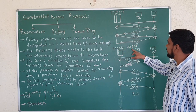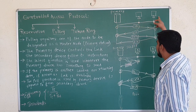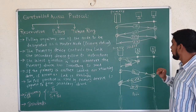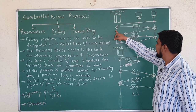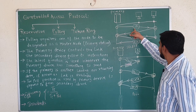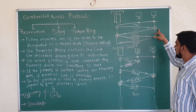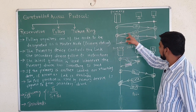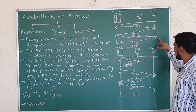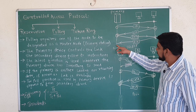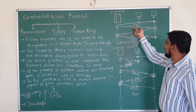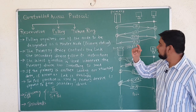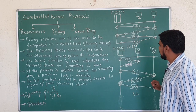This is an example of a select function. One node is decided as the primary node; all other nodes in the topology are secondary nodes. When the primary node wants to send some information, it will send a select frame. That select frame will contain the address of the destination secondary node in its header.